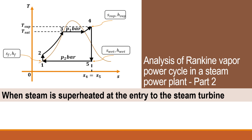In this video we'll try to understand the analysis of the Rankine Vapor Power Cycle in the case of a steam power plant when the steam is superheated at the entry to the steam turbine.